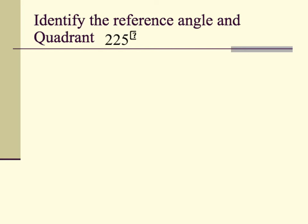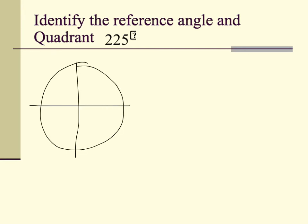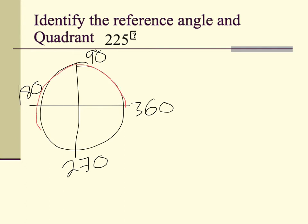This next angle is positive. Again, we want to find the reference angle and the quadrant. Looking at our unit circle, we have 90 degrees, 180, 270, and 360. We know 225 has to be somewhere between 180 and 270. How much more than 180 is 225? The answer is 45 degrees. So our reference angle is 45 degrees, and we are in the third quadrant.